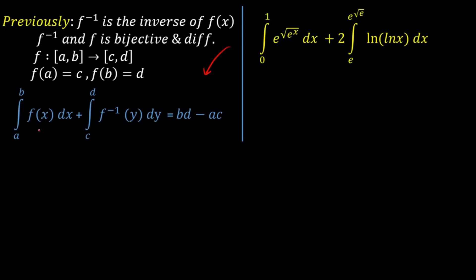In my previous video I proved this equals bd minus ac — you can click the i-button to check that video. In this video we'll use this nice identity to calculate a difficult integration: the integral from 0 to 1 of e raised to the power of e raised to the power of x over 2, plus twice the integral from e to e raised to the power of root e, of ln(ln(x)).